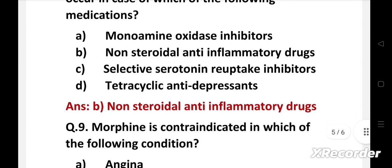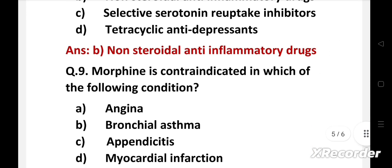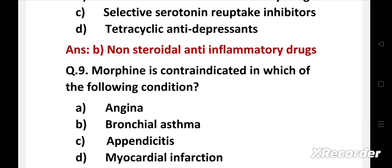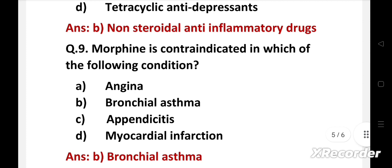Next question: morphine is contraindicated in which of the following condition? Option A: angina, B: bronchial asthma, C: appendicitis, D: myocardial infarction. Right answer is option B, bronchial asthma. Morphine is an opioid derivative that causes respiratory depression, so it is contraindicated in patients with bronchial asthma.